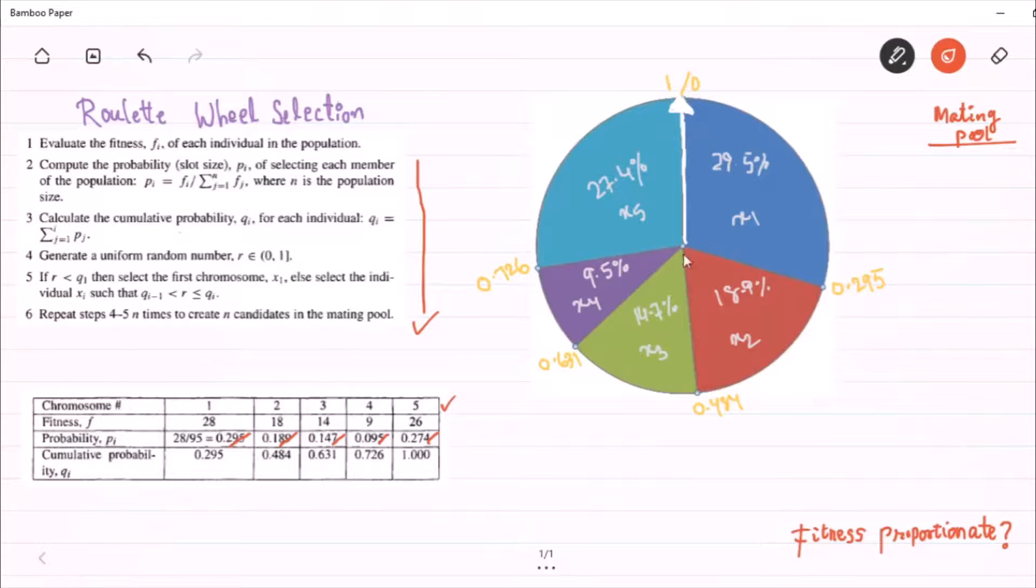So, how does this wheel work? Initially, the pointer is pointing to 0. And before that, I would like to make some point that these values are nothing but cumulative probabilities.